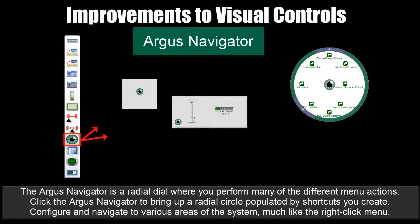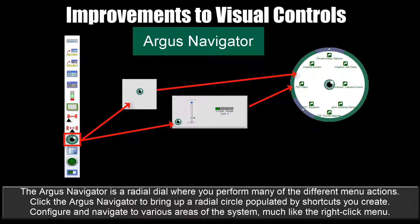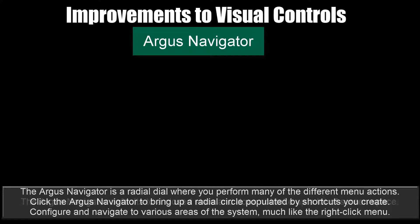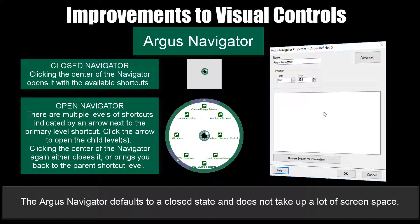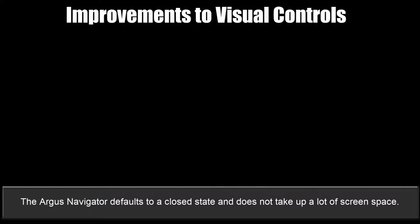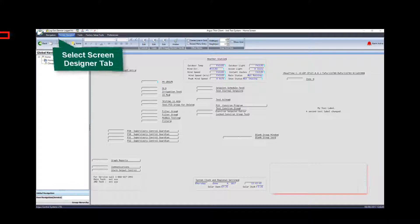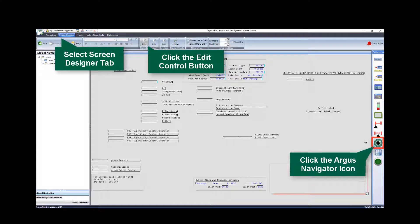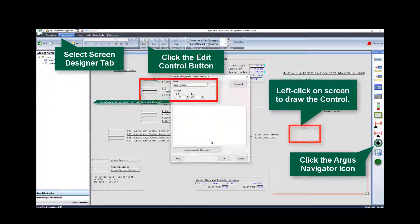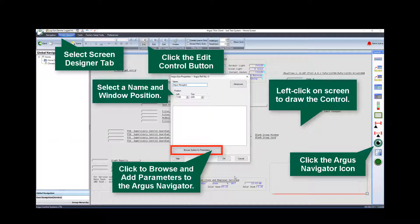The Argus Navigator is a radial dial where you can perform many different menu actions. You can click on the Argus Navigator to bring up a radial circle populated by shortcuts you create. It allows you to configure and navigate to various areas of the system, much like the right-click menu. The Argus Navigator defaults to a closed state and does not take up a lot of screen space. To set it up: select the Screen Designer tab, click the Edit Control button, click the Argus Navigator icon, select a name and window position, then click to browse and add parameters.